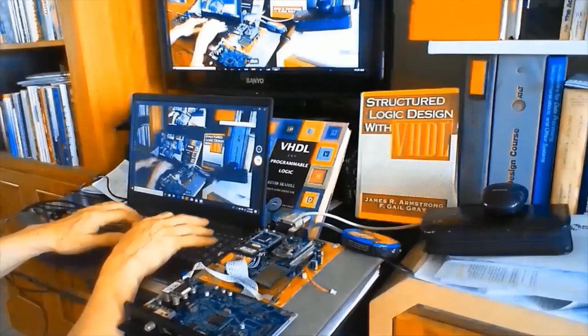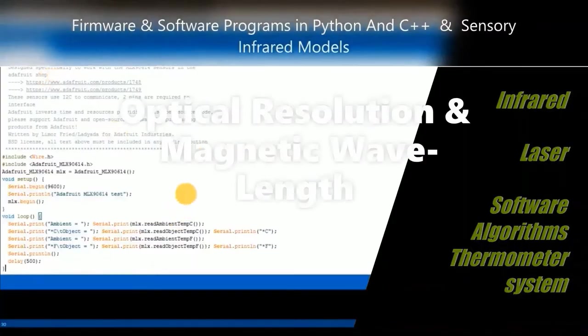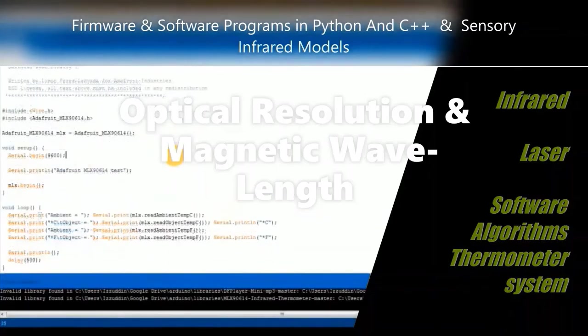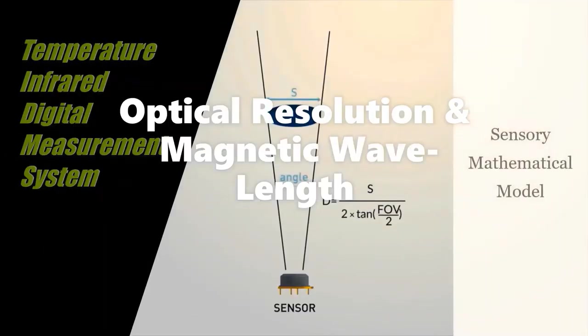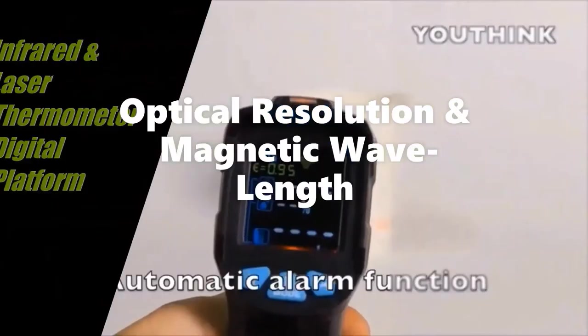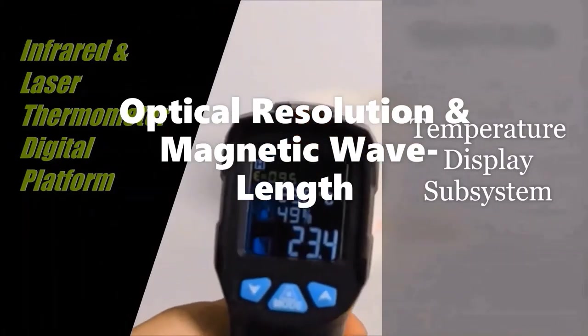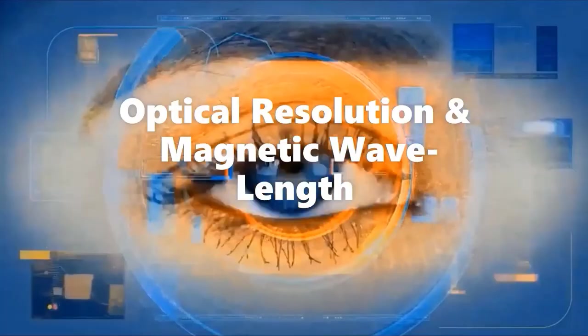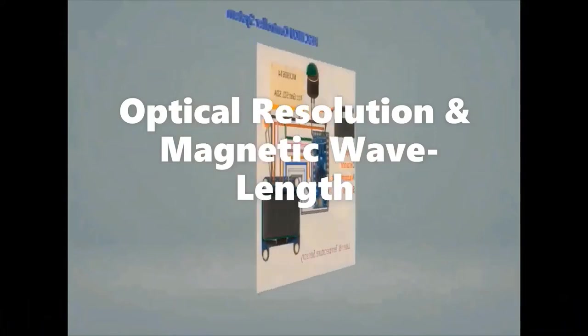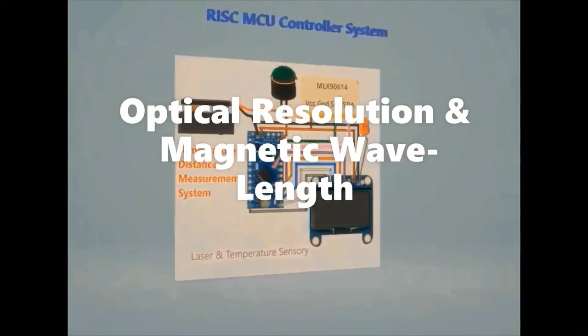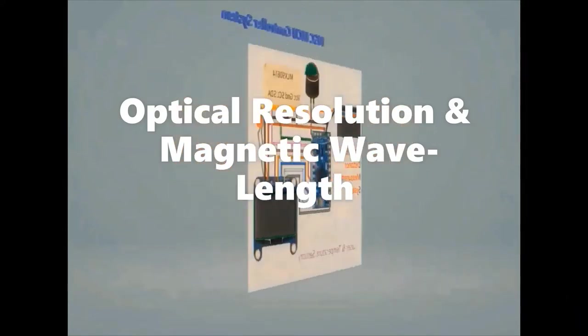The optical system of the infrared thermometer collects energy from a circular measurement spot and focuses it on the detector. The optical resolution is defined as the ratio of distance from the infrared thermometer system to the object divided by the size of the measured spot. The larger the ratio, the better the resolution and the smaller the spot size that can be measured.